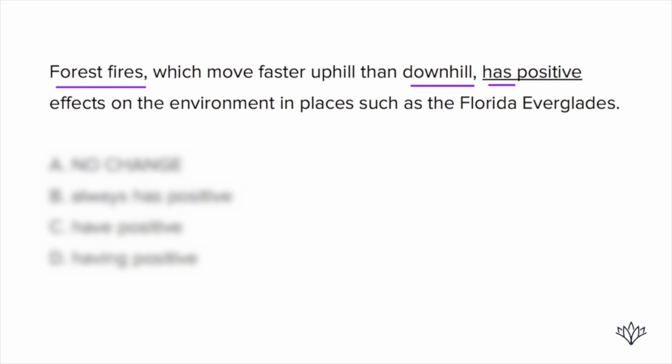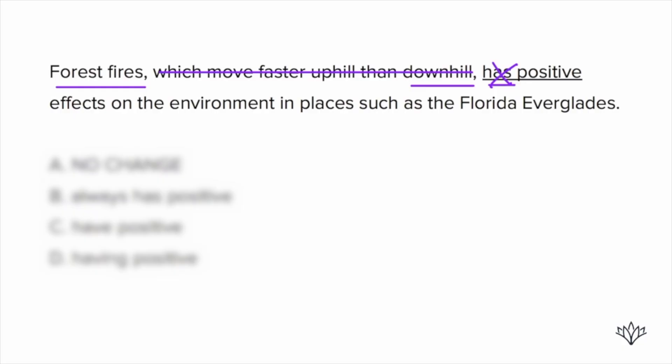So again, let's take our subject, put it right next to the verb, and cross out everything in between. 'Forest fires has positive effects?' No, it's got to be 'forest fires have positive effects.' Which answer choice gives us that? Answer choice C. So remember, always take your subject and put it right next to the verb, no matter how much information is in between.